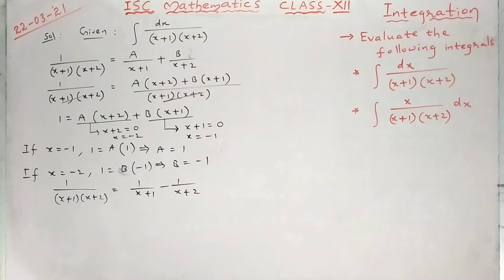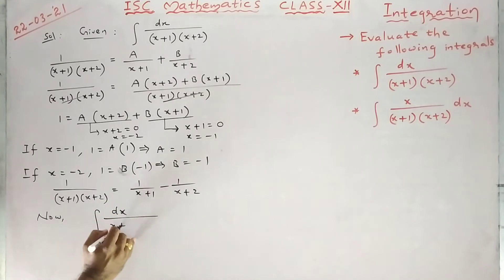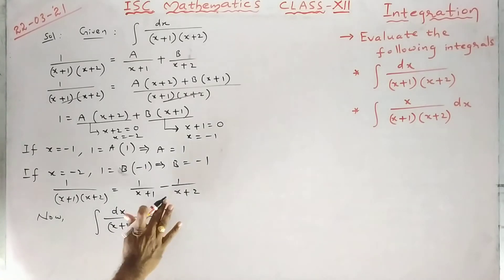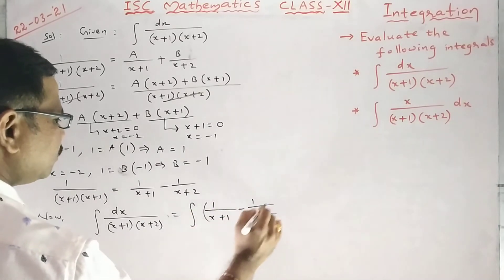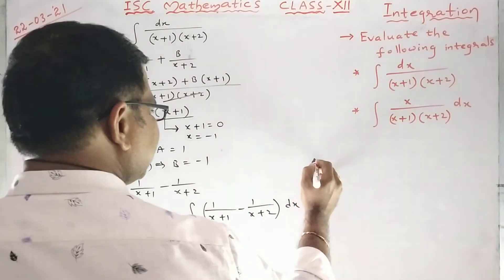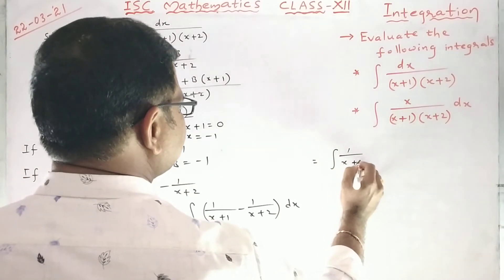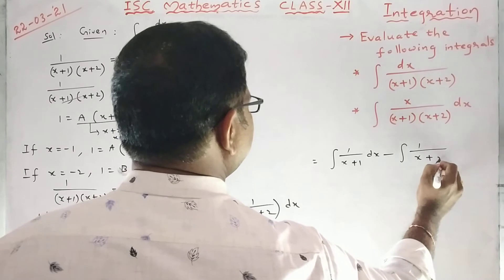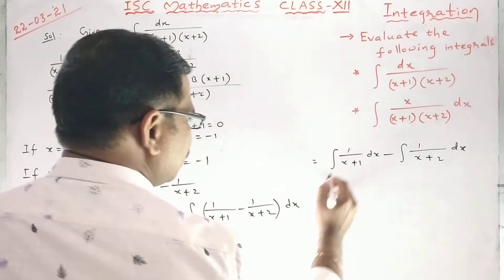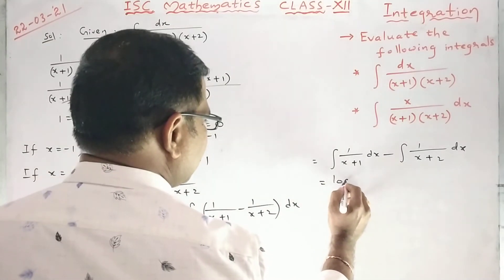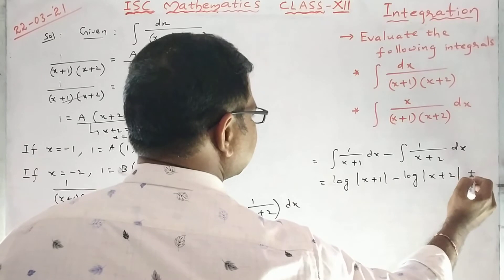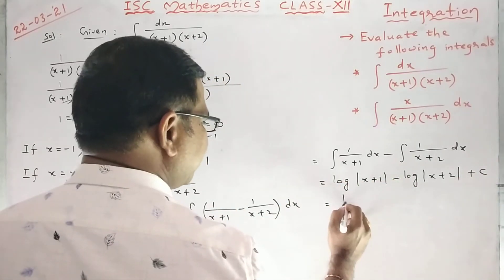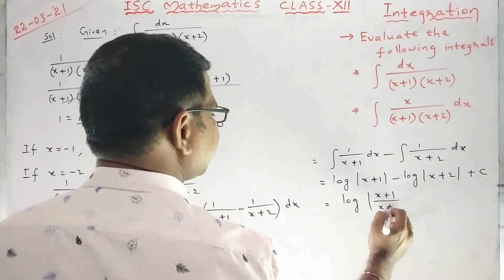Now, taking the given integral: the integral of dx/[(x+1)(x+2)] equals the integral of [1/(x+1) − 1/(x+2)] dx. Splitting the integration: integral of 1/(x+1) dx minus integral of 1/(x+2) dx. The integration gives log|x+1| minus log|x+2| plus C. This looks like log A minus log B.